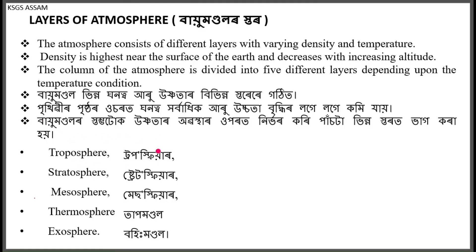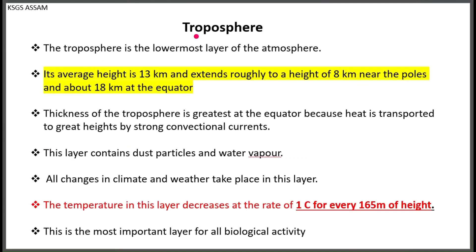The atmosphere layers are: Troposphere, Stratosphere, Mesosphere, Thermosphere, and Exosphere. The lowermost layer is the Troposphere, which has an average thickness of 13 km and extends roughly to a height of 8 km near the poles and about 18 km at the equator.